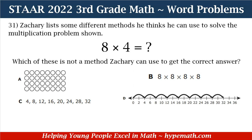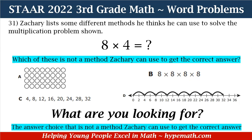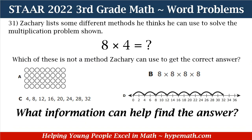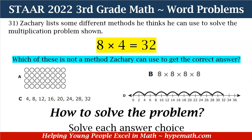Now in order to solve this problem, the first thing we are going to ask ourselves is: what are we looking for? We are looking for the answer choice that is not a method — meaning it's completely wrong — that Zachary can use to get the correct answer. The next question we're going to ask ourselves is: what information can help us find the answer?